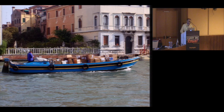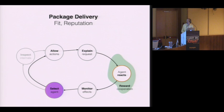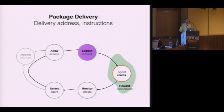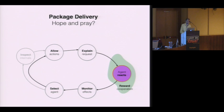Let's talk about package delivery. When I want to deliver a package, the first thing I need to do is select a package delivery service — on the basis of reputation and fit. Does it offer the services I need? If my dad's birthday is tomorrow, I might need one that offers overnight delivery. In this scenario, inspect is not relevant, so we skip to allow: in order to enable them to deliver the package, I must give them the package. I then explain what I want them to do — what address to deliver it to, any other delivery instructions — and then I pay them, creating an incentive for them to follow through.